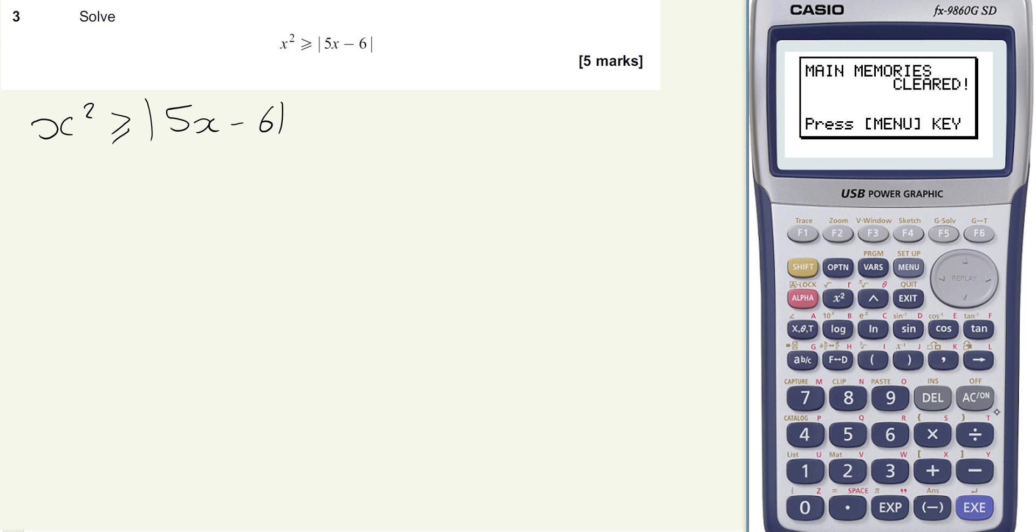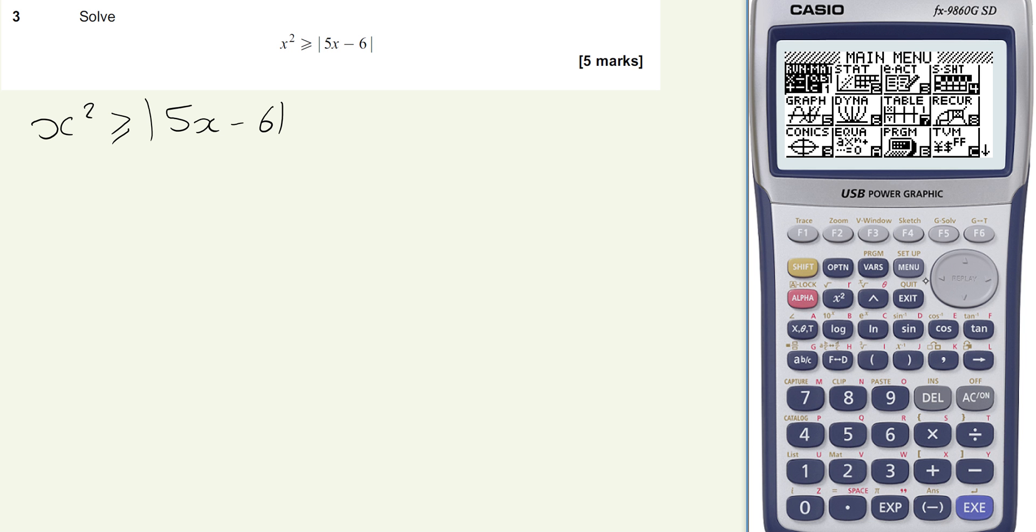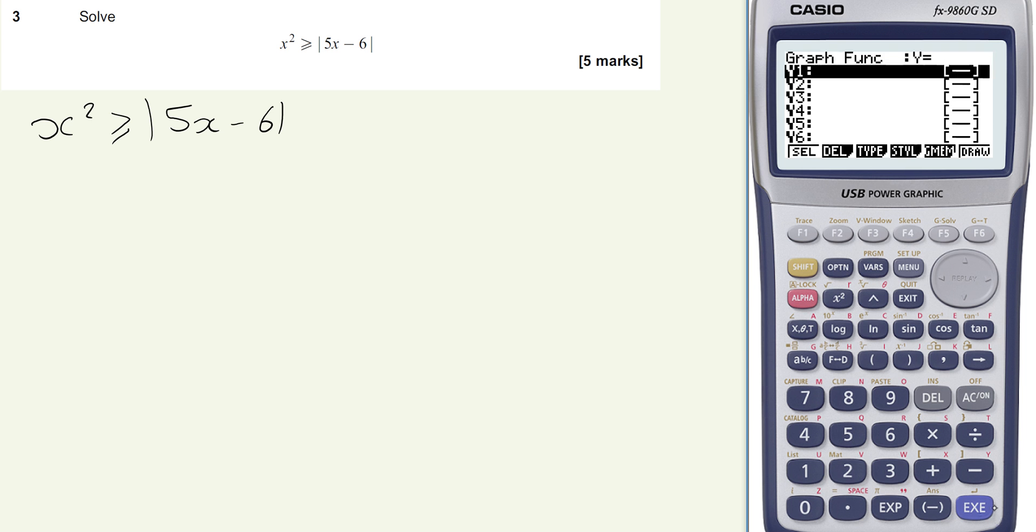So the first thing that we can do here, we've got our graphical calculator, is we can actually start working through this problem on the graphical. So we're going to use the graphing function and we'll put these two functions in. So we've got x squared. I completely messed that up. There we go. We've got x squared and we've got the absolute value. So this is done by doing option number absolute value of 5x minus 6.